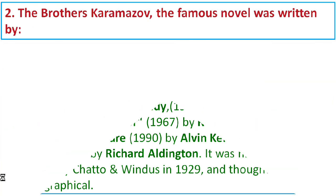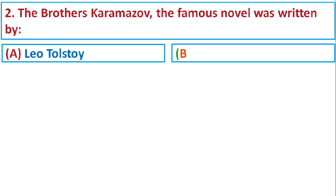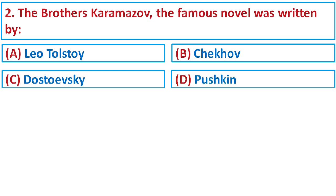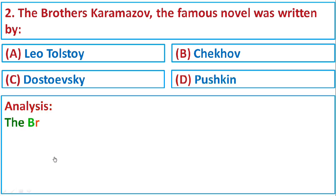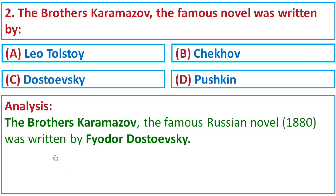Question number two: The Brothers Karamazov, the famous novel, was written by Option A: Leo Tolstoy, Option B: Chekhov, Option C: Dostoevsky, or Option D: Pushkin. The Brothers Karamazov, the famous Russian novel published in November 1880, was written by Fyodor Dostoevsky. The correct option is C: Dostoevsky.